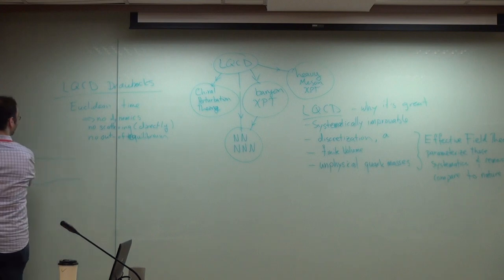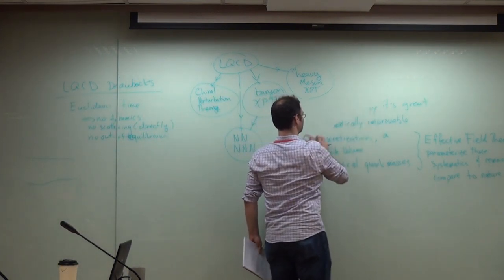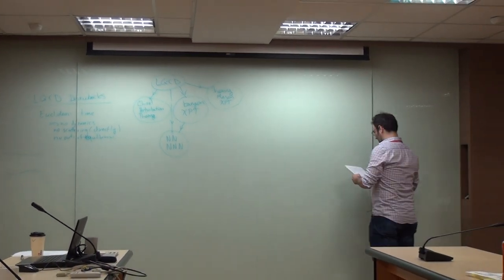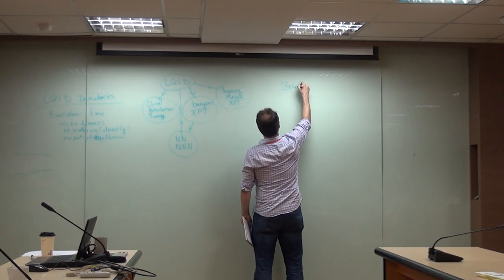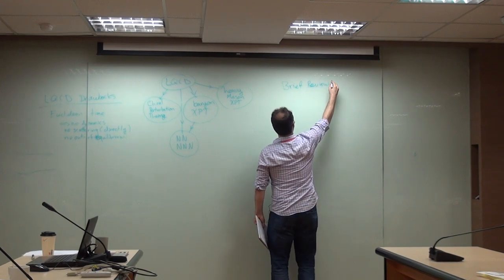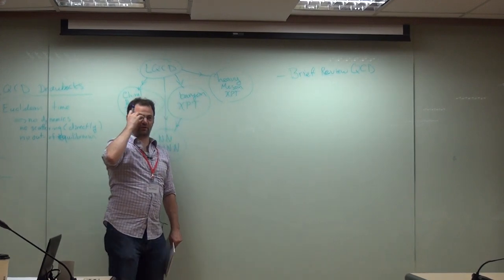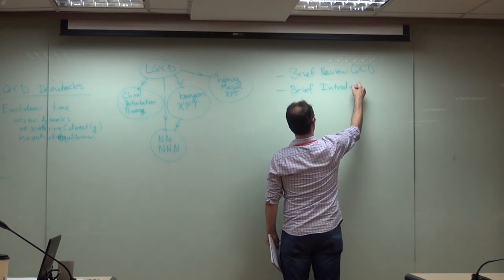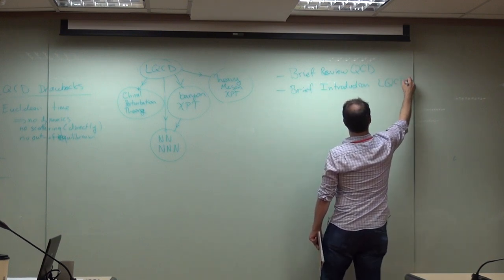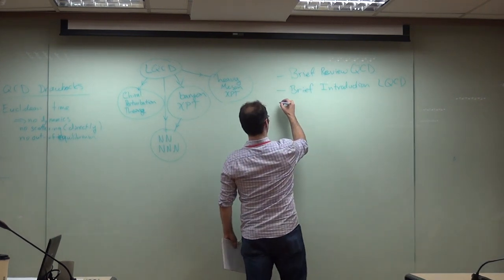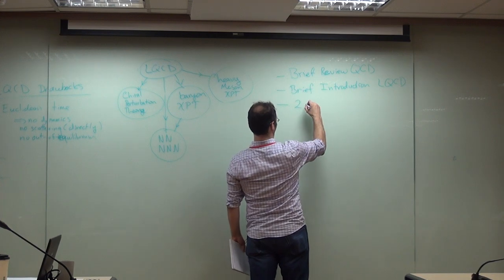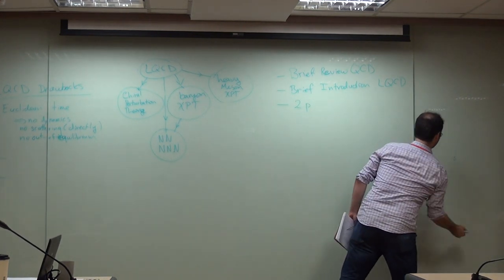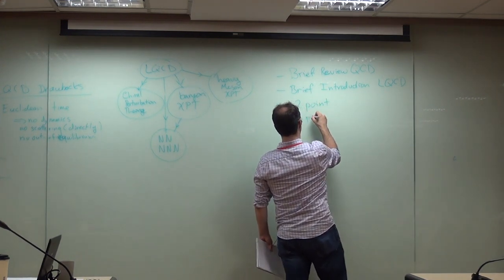That's kind of my introduction. So, what are we going to talk about? First, a brief review of QCD, because there are things you need to know about QCD before we talk about lattice QCD. Then a brief introduction to lattice QCD. In order to talk about lattice QCD, we need to understand the ingredients — what goes under the name two-point and three-point correlation functions. Throughout this talk, I'm going to assume you're familiar with quantum field theory.